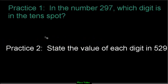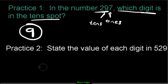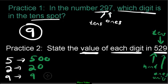Now it's your turn - pause the video and try these two questions on your own, then come back when you're ready. For practice number two, count them one at a time - nine of them. The question doesn't ask this, but the number would read five hundred twenty-nine.